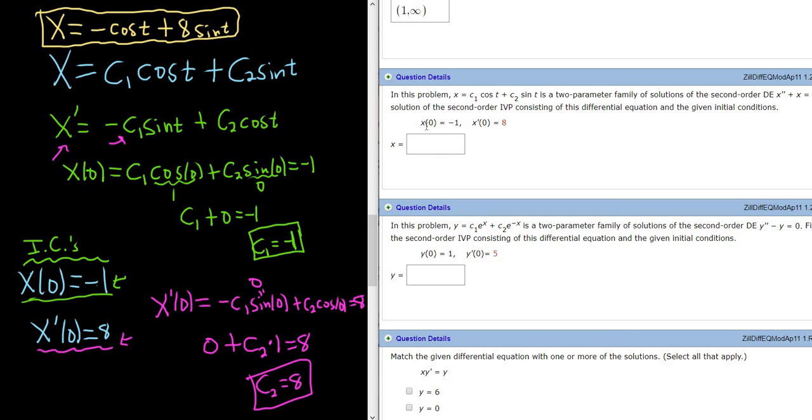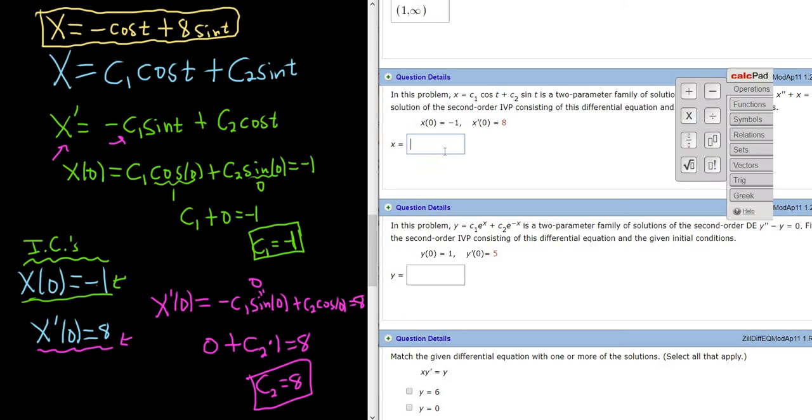So what does that mean intuitively? The first condition tells us that it passes through the point 0, negative 1. The second condition tells us that the slope at that point is equal to 8. It's really interesting.